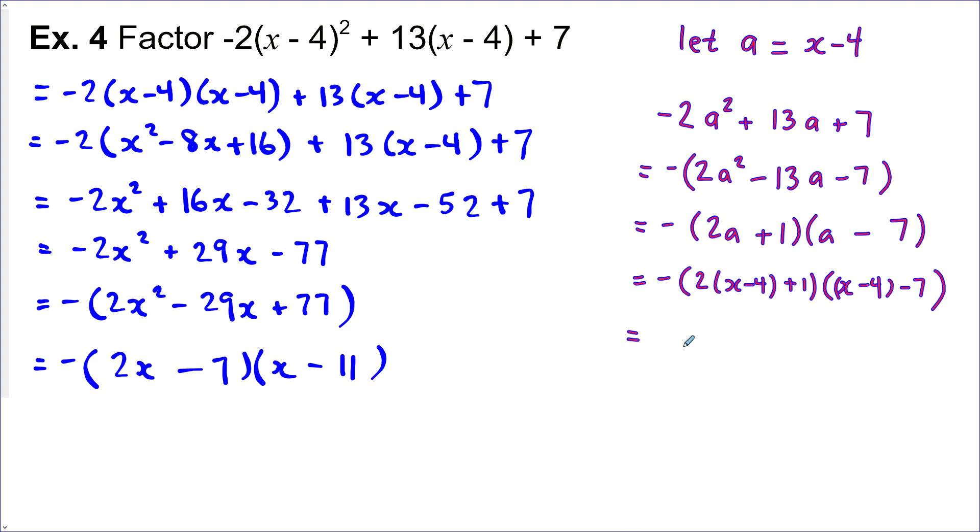So I'm taking the a out that I made up just to hold the spot for this x minus 4 and then clean this up. So distribute in the 2 here. So 2x minus 8 plus 1 and x minus 4 minus 7 minus 11. One more thing here. 2x minus 7, x minus 11. You can see that our answers are the same.